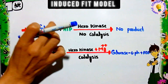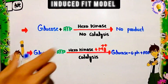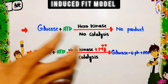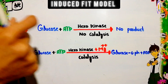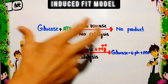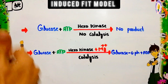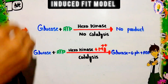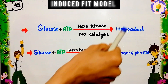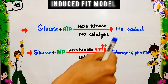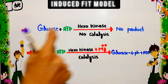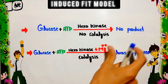No product is formed because the shape of the active site of the enzyme and the shape of the substrate are not complementary. To convert the substrate into the product, we require an additional substance — the inducer substance — which is responsible for modifying the active site of the enzyme. When this modification occurs, the reaction proceeds. The inducer substance here is the magnesium ion, which modifies the active site of hexokinase and converts the substrate glucose into the product glucose-6-phosphate and ADP.